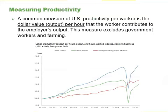An economy's rate of productivity growth is closely linked to the growth rate of its GDP per capita, although the two are not identical. For example, if the percentage of the population who holds jobs in an economy increases, GDP per capita will increase but the productivity of individual workers might not be affected. Over the long term, the only way that GDP per capita can grow continually is if the productivity of the average worker rises or if there are complementary increases in capital.